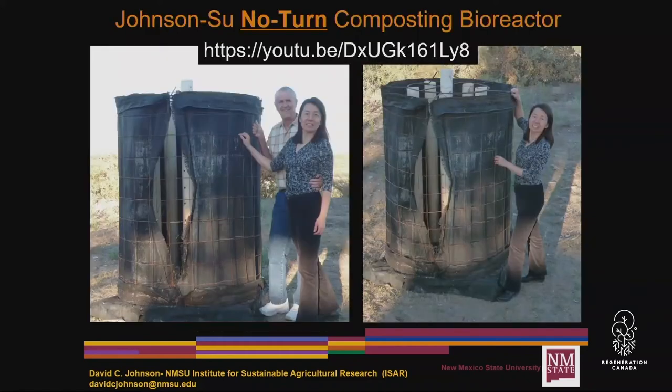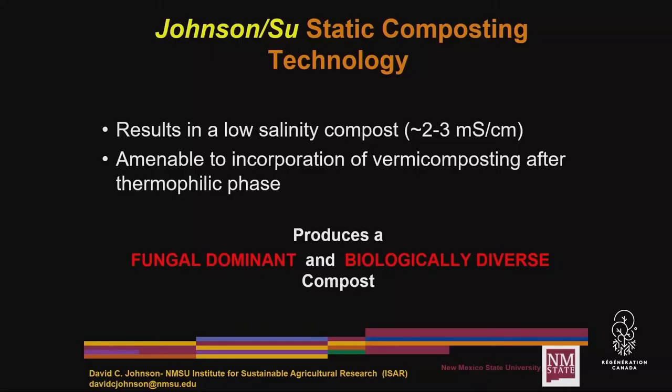In order to implement this into agriculture where we did not have the animals, we developed a composting process. Most composting is done with windrow and you do not end up with a very fungal dominant compost. This is a static composting system — no turn. It's available on YouTube. It solved one of the big problems with dairy manure for USDA: it dropped the salinity of that substrate from 33 to 40 millisiemens down to less than three. But most importantly, it gave a fungal dominant and biologically diverse compost.